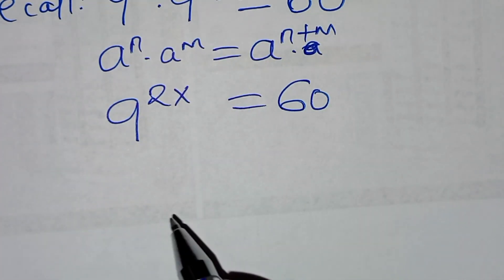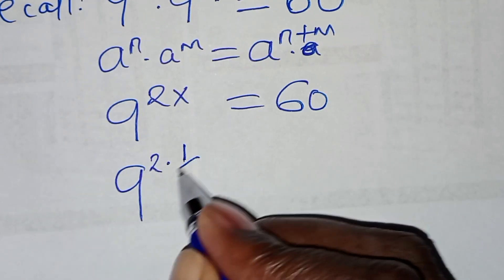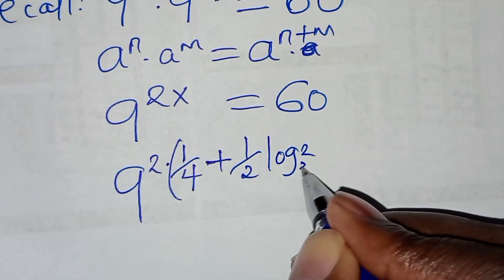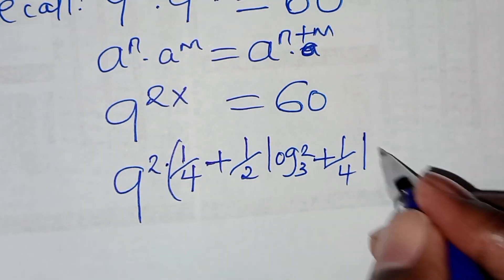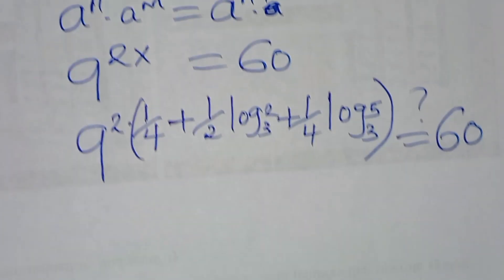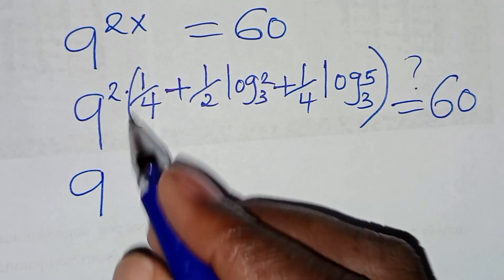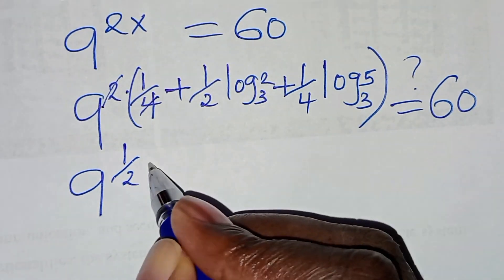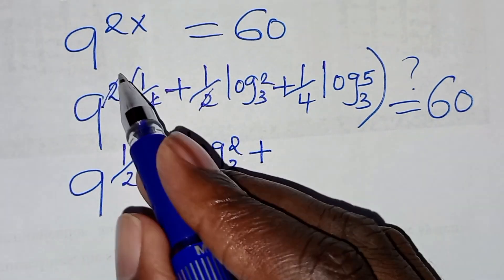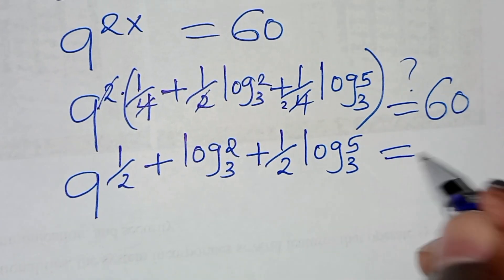So we'll have 9 to the power 2 multiplied by x, where x is 1 over 4 plus one half log base 3 of 2, then plus 1 over 4 log base 3 of 5. This is supposed to give us a value of 60. Let's check if this is true. From what we have here, we can simplify so that we have 9 to the power one half, plus log base 3 of 2, then plus one half log base 3 of 5. This should give us a value of 60.